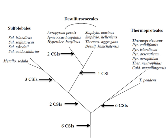Clade II, encompassing Actinobacillus pleuropneumoniae, Actinobacillus minor, Haemophilus ducreyi, Mannheimia haemolytica and Haemophilus parasuis, was supported by 9 CSIs. Based on these results, it was proposed that Pasteurellales be divided from its current one family into two different ones. Additionally, the signatures described would provide novel means of identifying undiscovered Pasteurellales species.